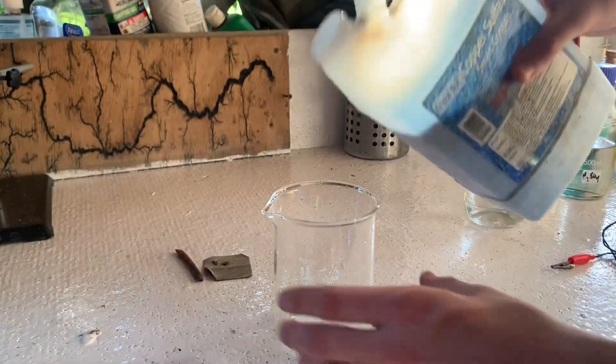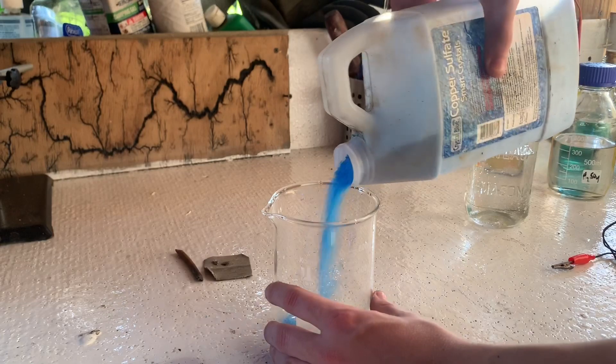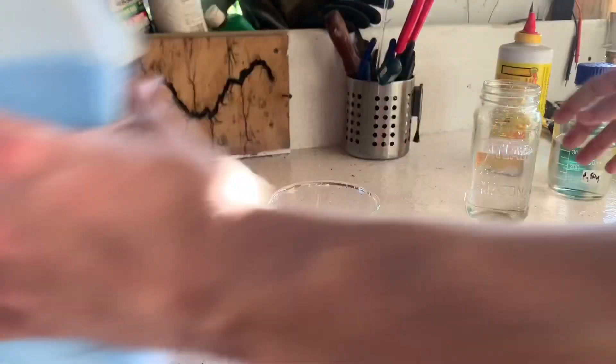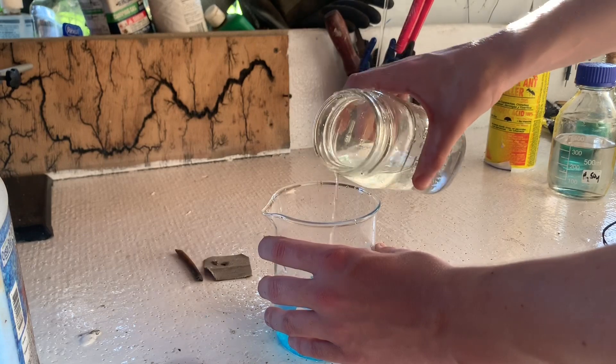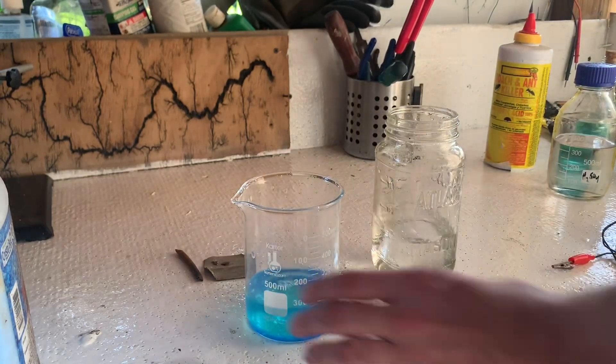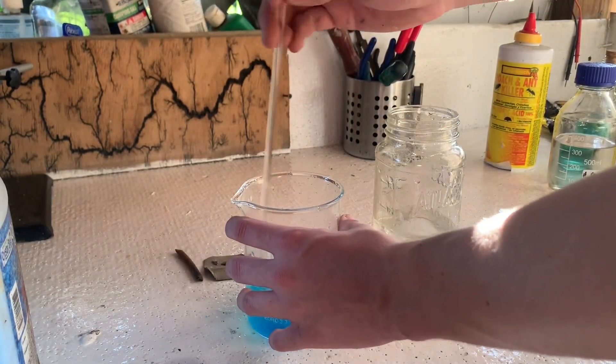I'm just going to pour some of this copper sulfate which you can buy at a hardware store. It's sold as root killer. Pour it into a beaker here and just add some tap water. I'm not using distilled. Get it in there and then I'm just going to stir it around to create a simple solution here.